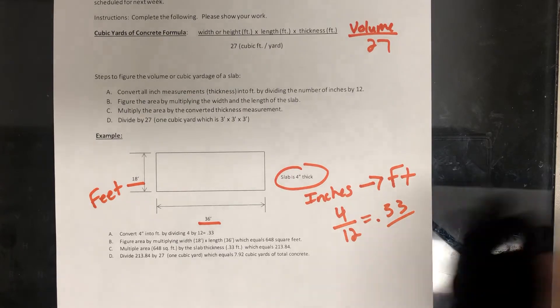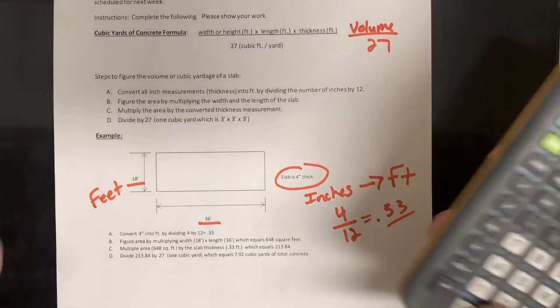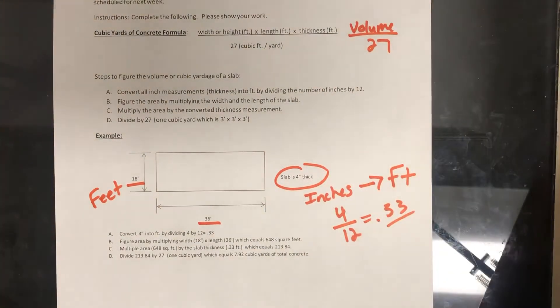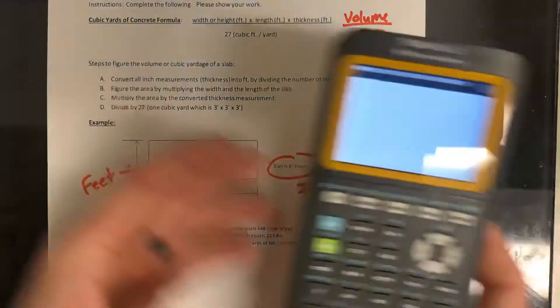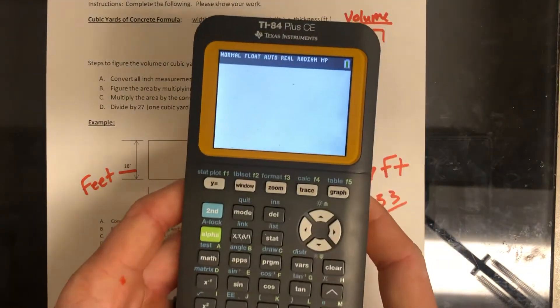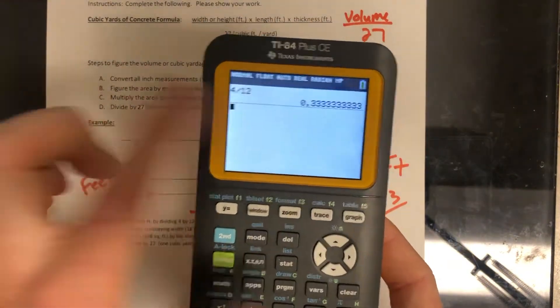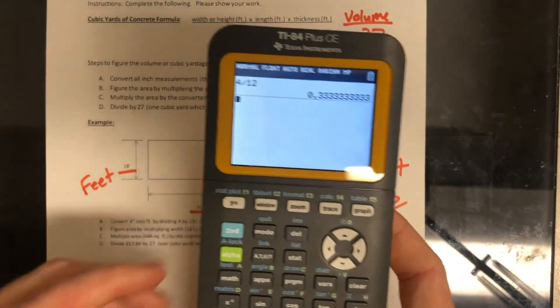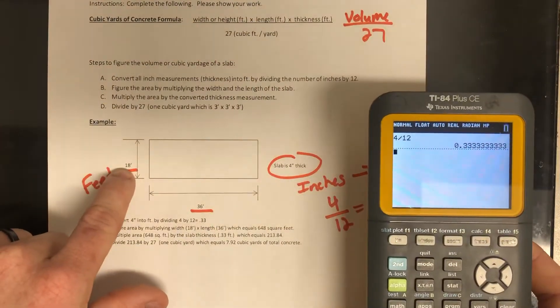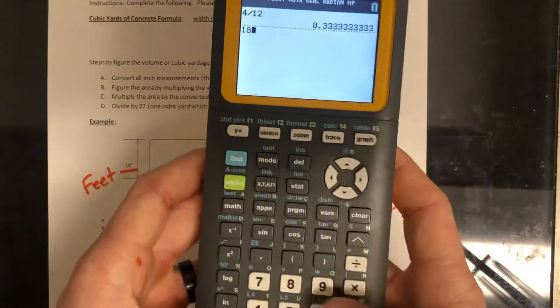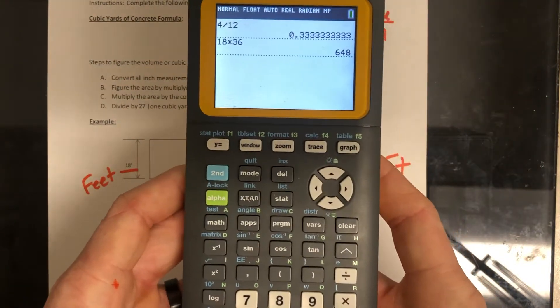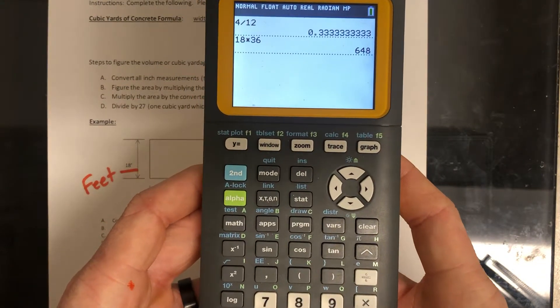One thing I would like you guys to do that's not on this example is I don't want you to reduce it until the very end. So what I'm going to have you do is just type in your calculator. Hopefully you can see that. Four divided by 12, and leave that as is. And then we're going to find 18 times 36. That's 648.